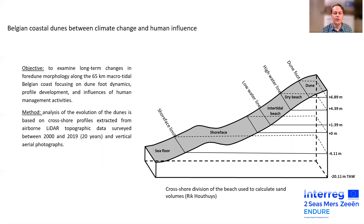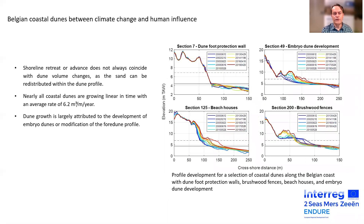So we've done an investigation using topographic data collected by LiDAR system to see if that's the case. We look at various places with different types of dune foot configuration — what happens with the volume of the dunes and the position of the dune foot. We see that if the shoreline retreats or advances, it's not automatically a loss or a gain in the volume of the dune. Although the general trend is an increase of dune volume in time, consistently around 6 cubic meters per meter per year for most dunes.